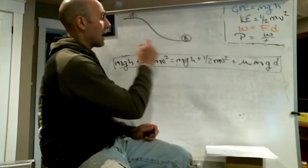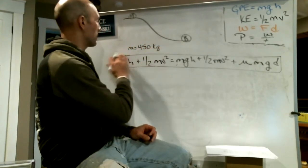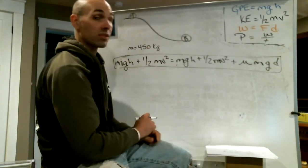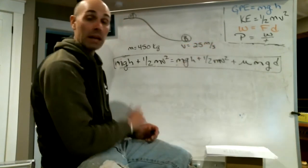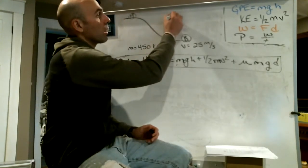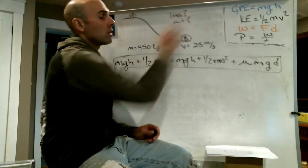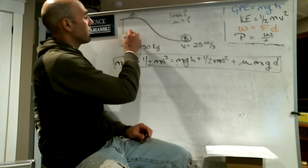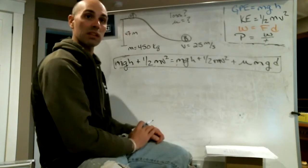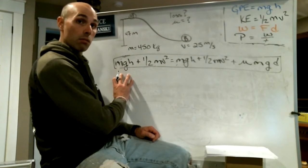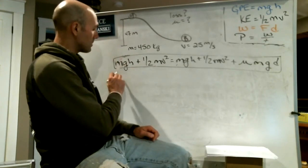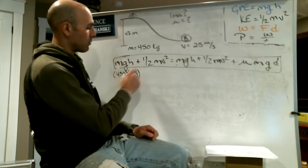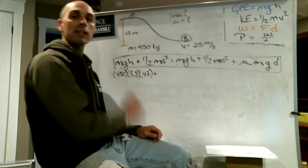The roller coaster's mass is 450 kilograms. It starts at point A at rest, then rolls down the track and reaches a speed of 25 meters per second at the bottom, point B. We want to find: what is the energy loss, and what is mu, the coefficient of friction? The roller coaster starts at a height of 47 meters.